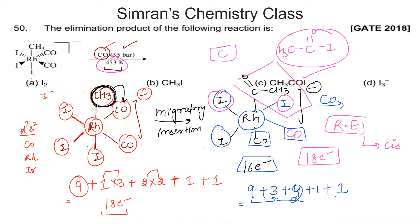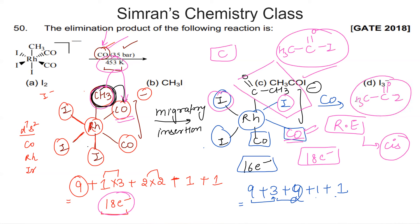To summarize the organometallic mechanism: first, migratory insertion of CH3 into CO creates a vacant site. Then CO is added to the vacant position. Finally, reductive elimination at high temperature gives CH3I as the product. The correct answer for the GATE 2018 question is CH3I.